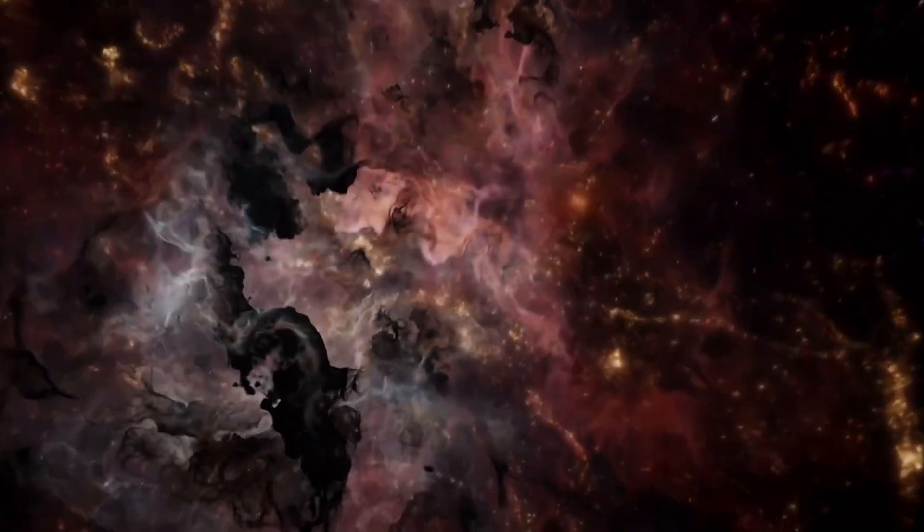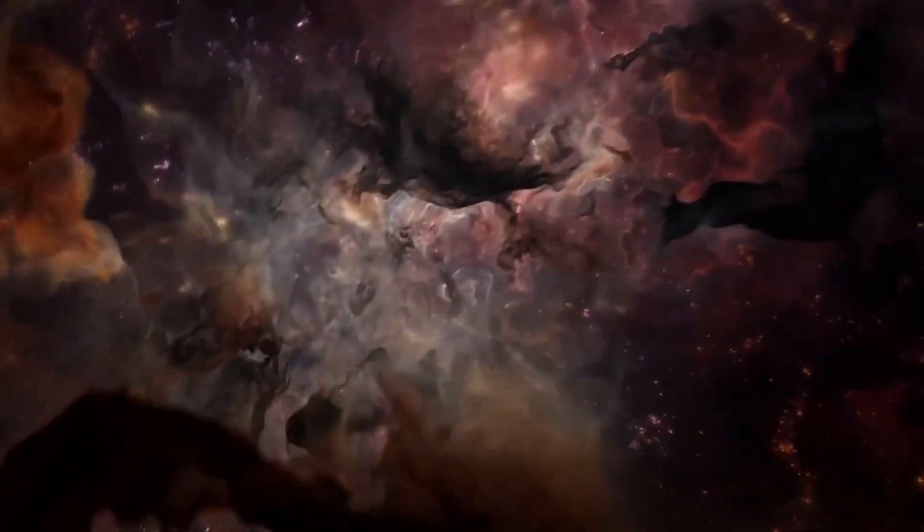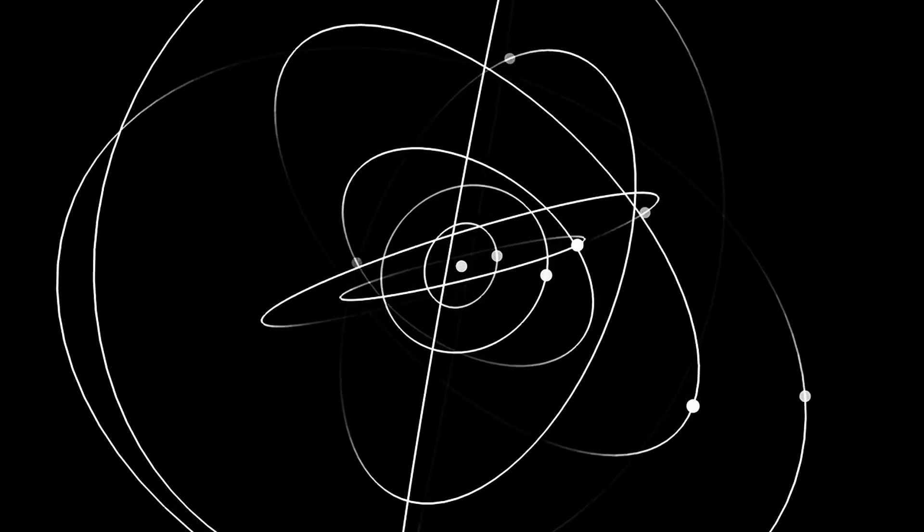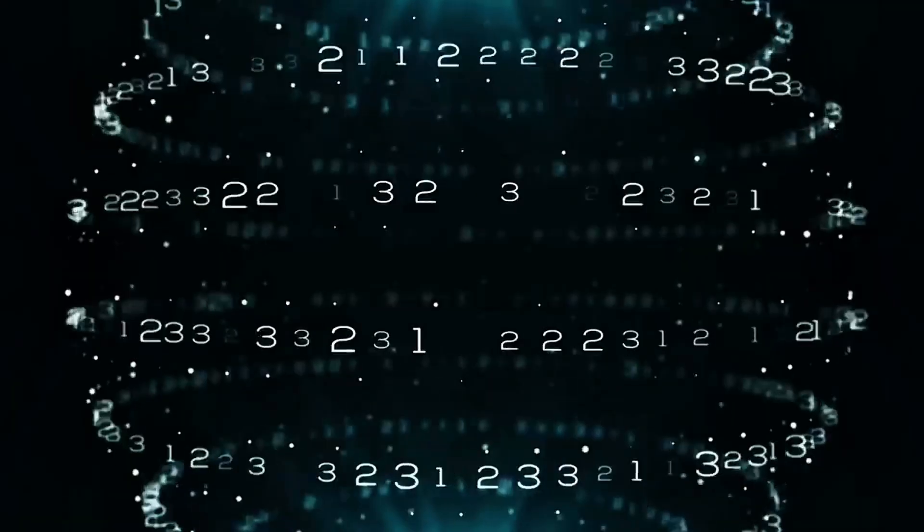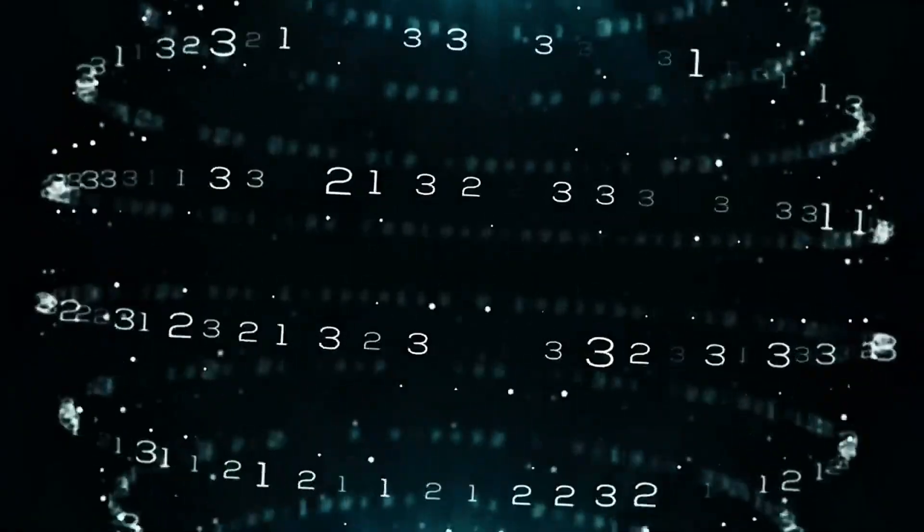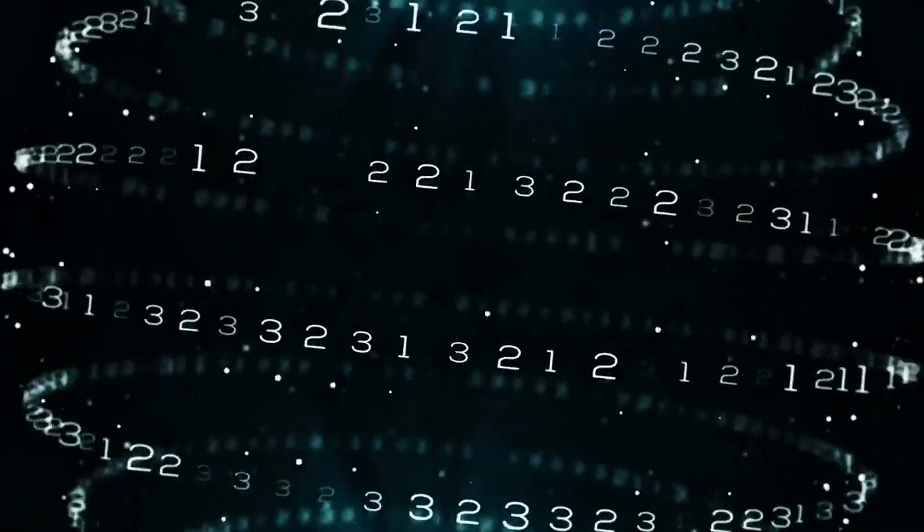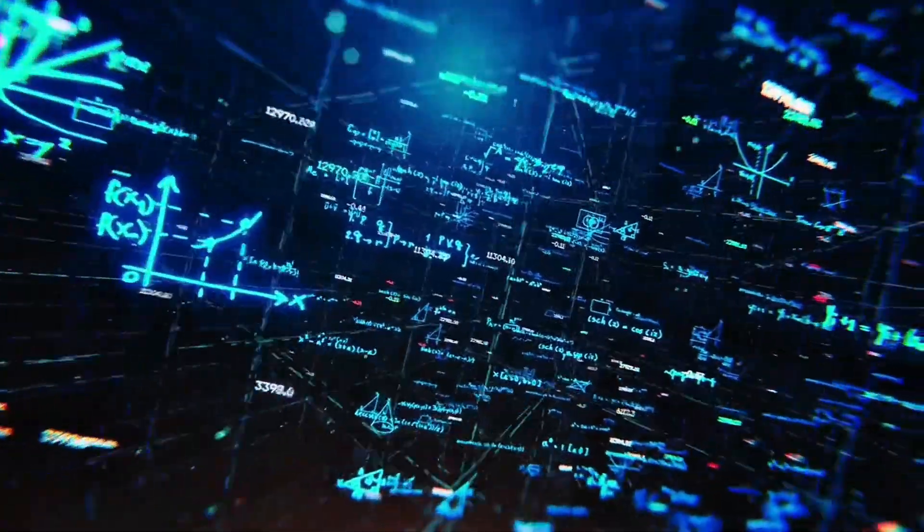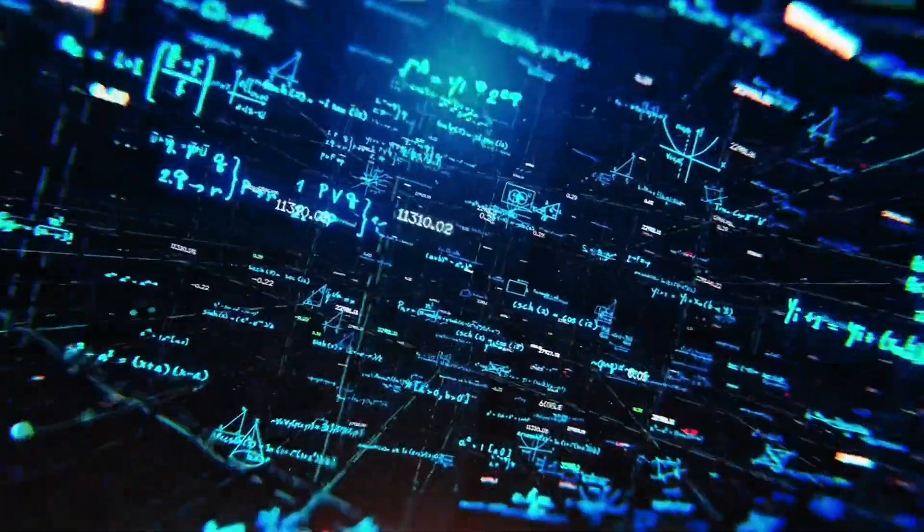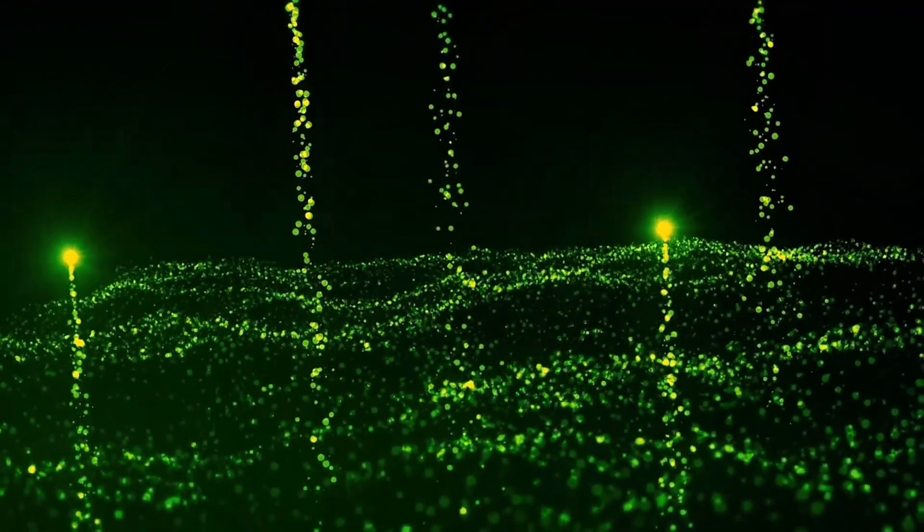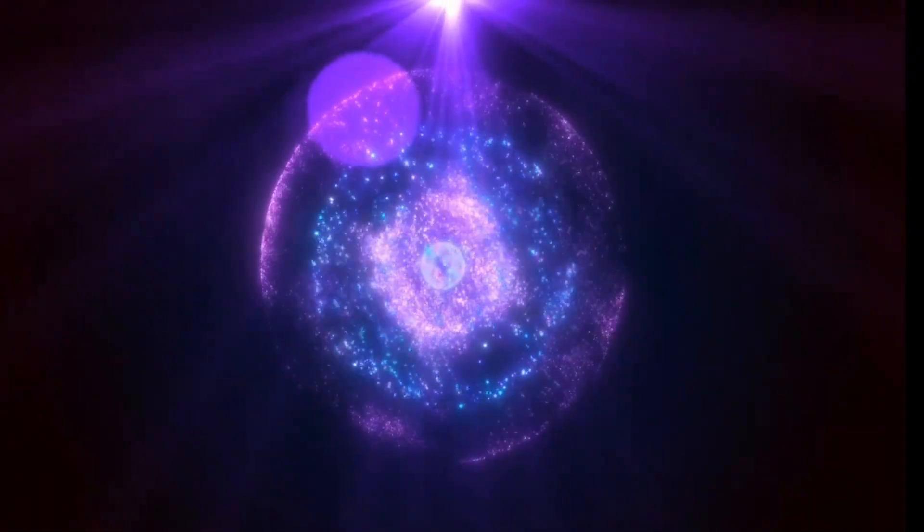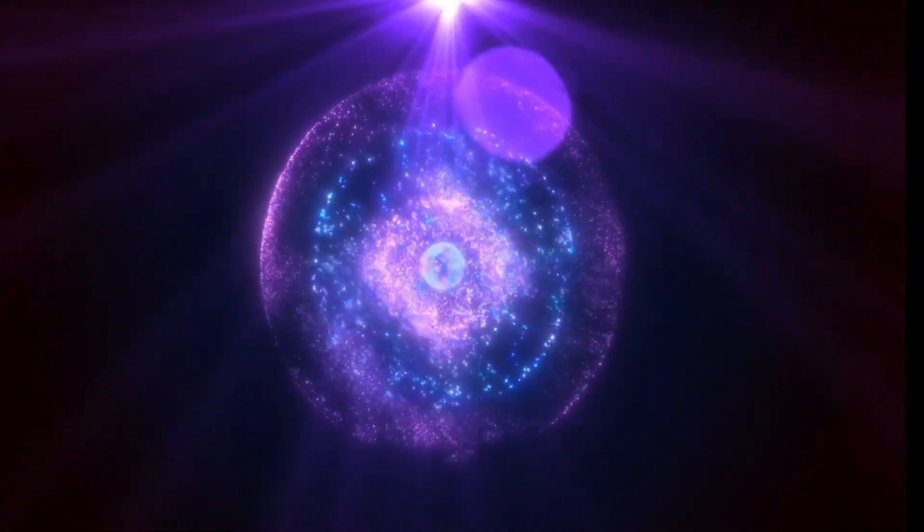Some physicists believe that everything—the galaxies, time, even consciousness—could be the result of a single, spontaneous fluctuation in this web of fields: a vacuum genesis, the birth of the universe from what seems like nothing at all. The idea sounds impossible, yet the equations say it could happen. In the quantum realm, even the vacuum can briefly break its own rules, borrowing enough energy to spark creation before returning to equilibrium.